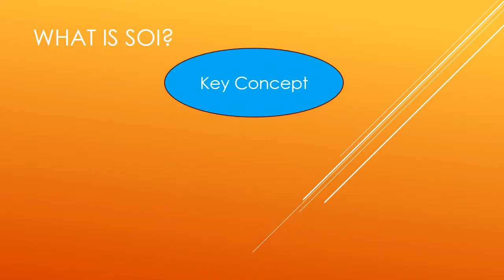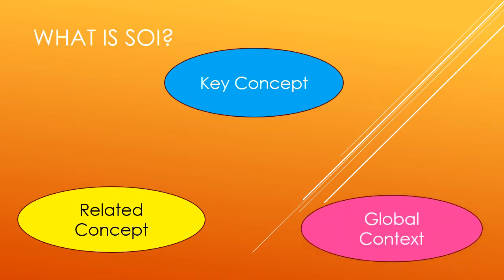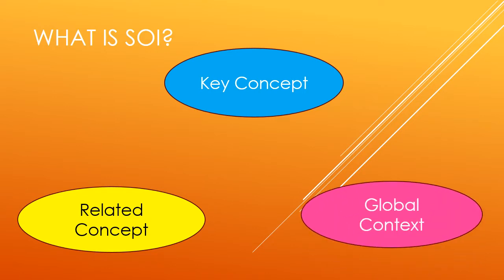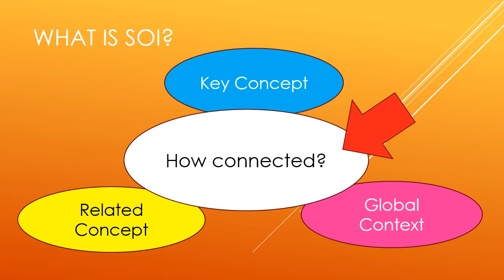In MOIS students' unit, there is key concept, related concept, and global context. And MOIS students think about how these things are connected in this unit, at the first of the unit and last of the unit. This is the SOI. In other words, or in long words, it is Statement of Inquiry.